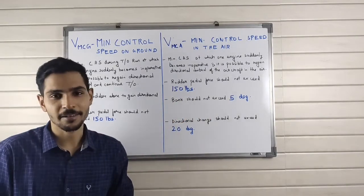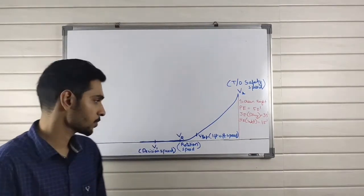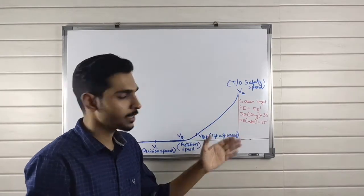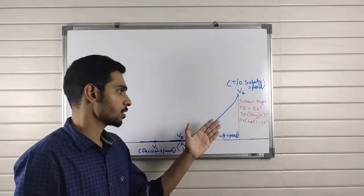Now we'll look at different takeoff speeds. Before getting into those, we'll look at screen height. It is different for different types of aircraft. For piston engines, it is 50 feet.